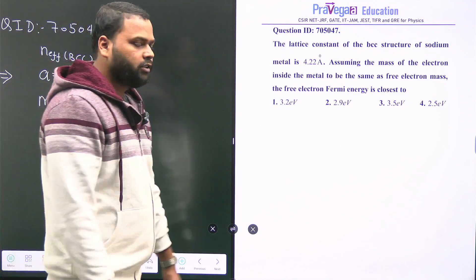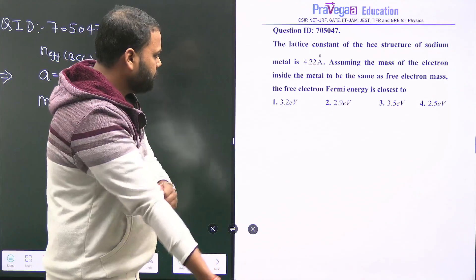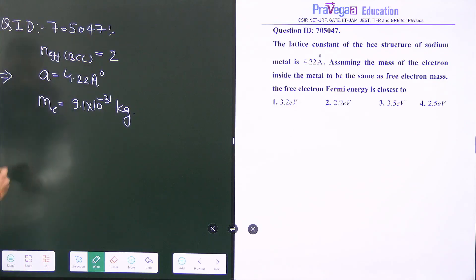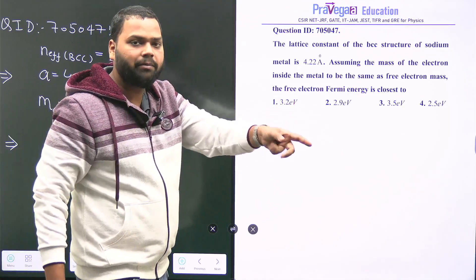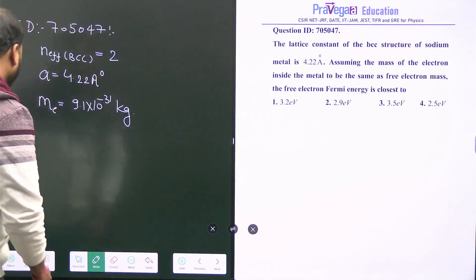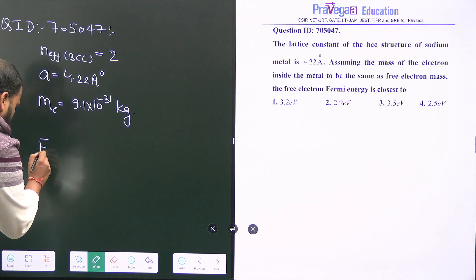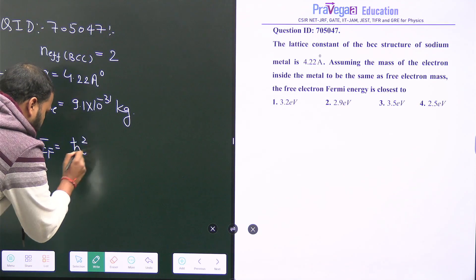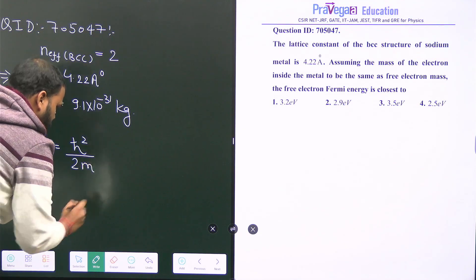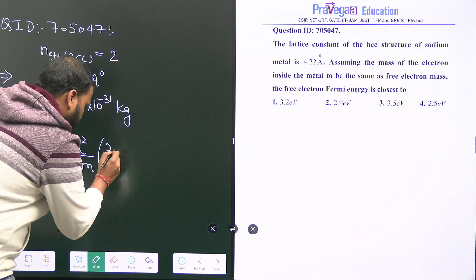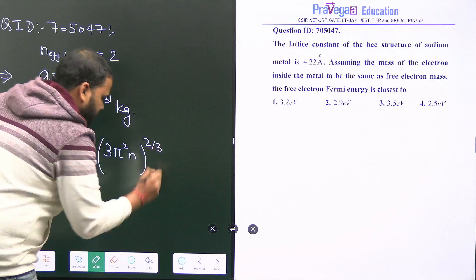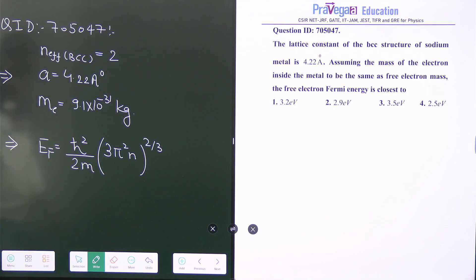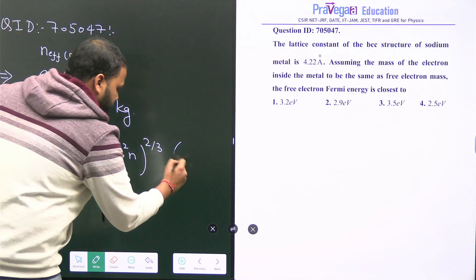This is a formula-based question. You have to find the Fermi energy for a three-dimensional crystal. The Fermi energy relation for three dimensions is h-bar squared over 2m times (3π²n)^(2/3), where this is our expression for the Fermi energy in three dimensions.